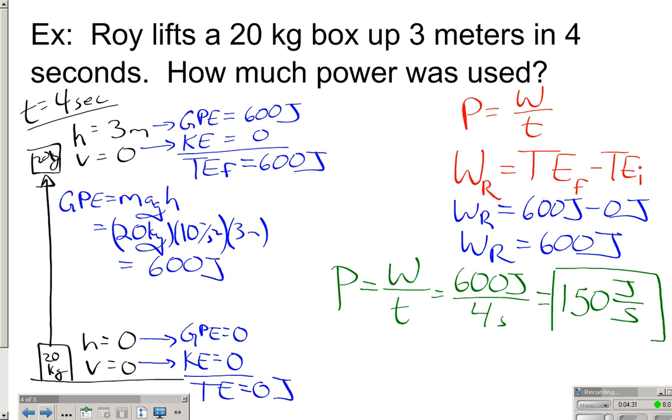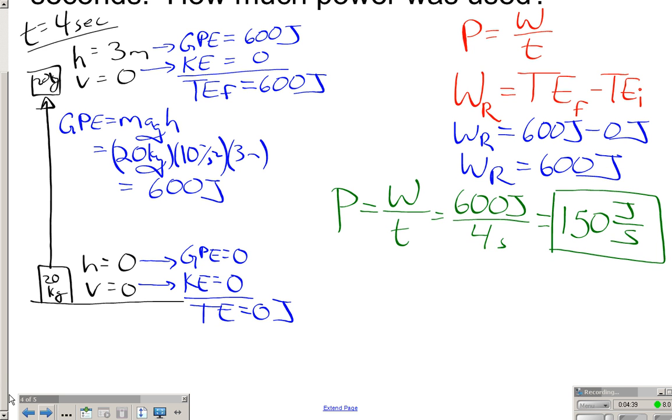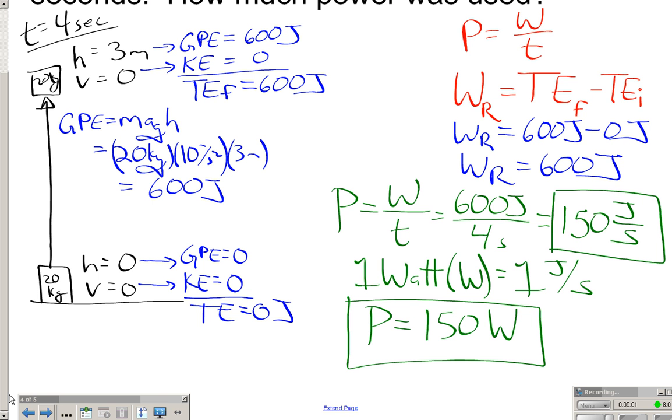Now, to add one extra teeny little hiccup into this, we don't use joules per second. We use watts. So one watt, abbreviated with a capital letter W, is the same as one joule per second. So our power here is actually 150, not joules per second, but 150 watts. So be careful there. A lot of times people get the W for work and the W for watts confused. Notice if it comes after the number, it's watts. Whereas if it was work, it would say W equals.